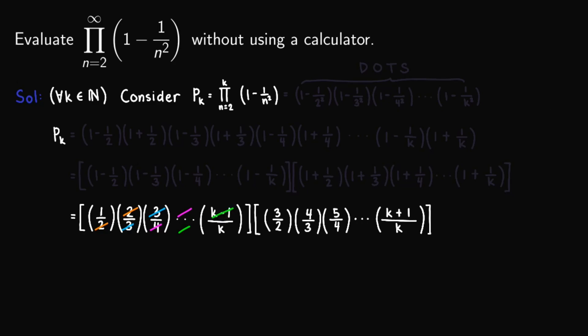For this next one, we can cancel out the threes, the fours, the fives, and so on until the k's. For this one, the idea is that we cancel out the numerator of the first term with the denominator of the next term. So we repeat that one until we reach k.